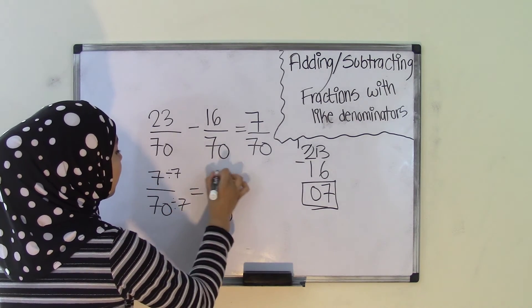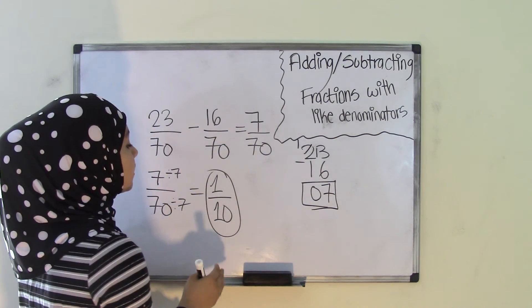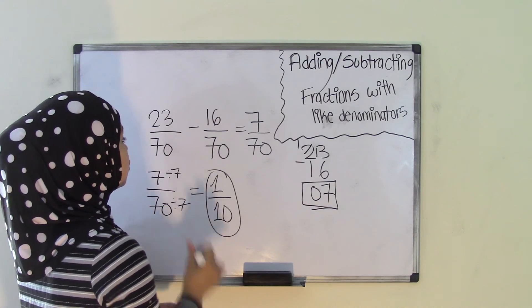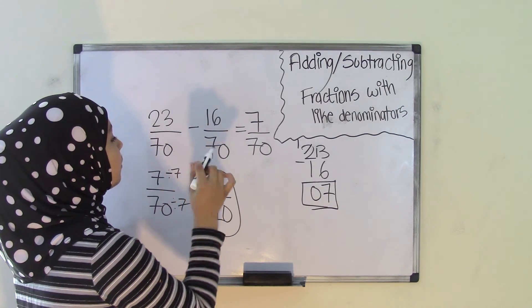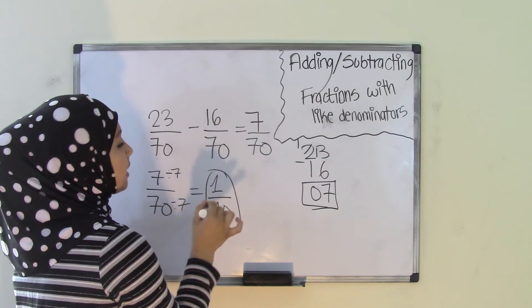And we get our reduced fraction of 1 over 10, and this cannot be further reduced. So that is going to be our simplest form. So that means 23 over 70 subtracted by 16 over 70 equals 7 over 70 or 1 tenth.